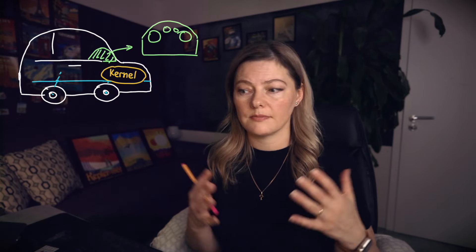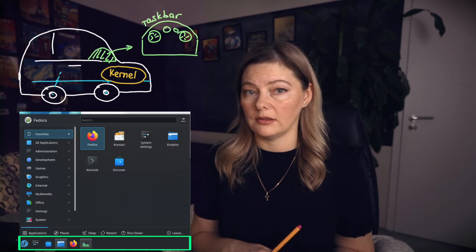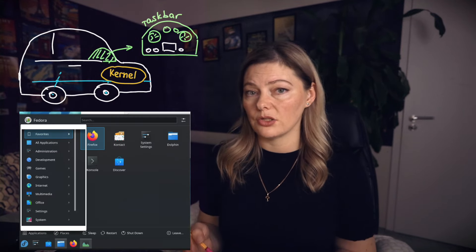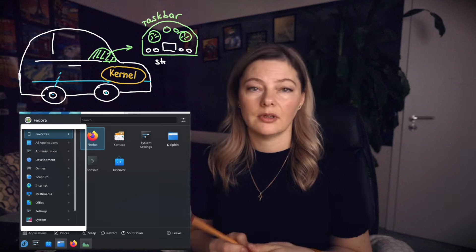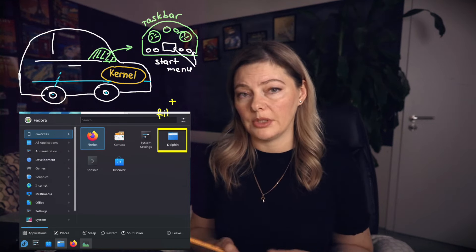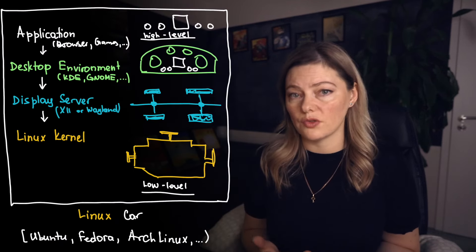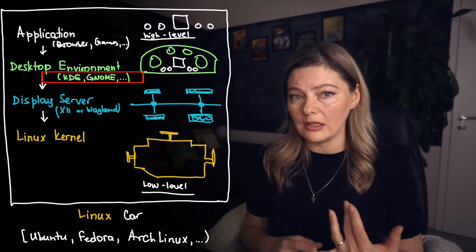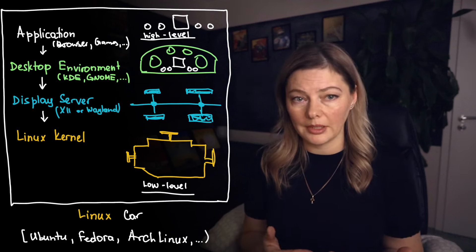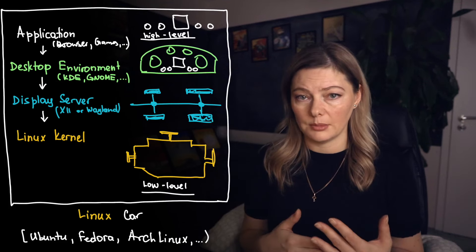Now on to the desktop environment. If the display server is the car's chassis, then the desktop environment is like the car's interior and dashboard, all in one. It includes things like the taskbar, the start menu or application launcher — like your car's controls — and the file manager, which we can think of as the car's storage compartments. There are many desktop environments to choose from: GNOME, KDE, KDE Plasma, XFCE, Cinnamon, and more.